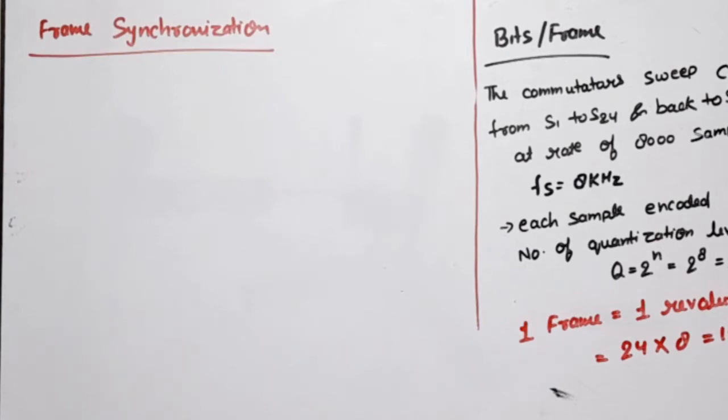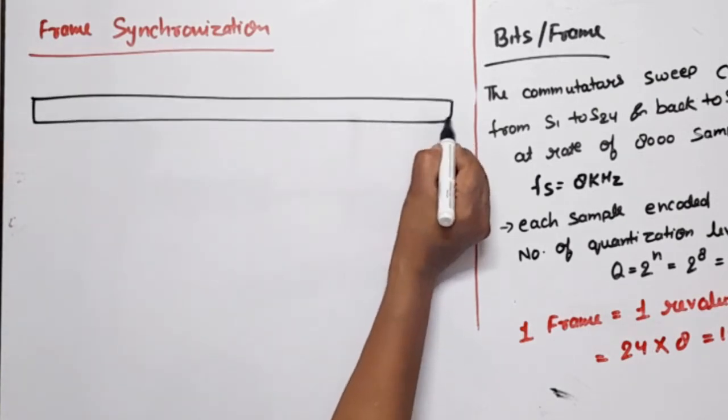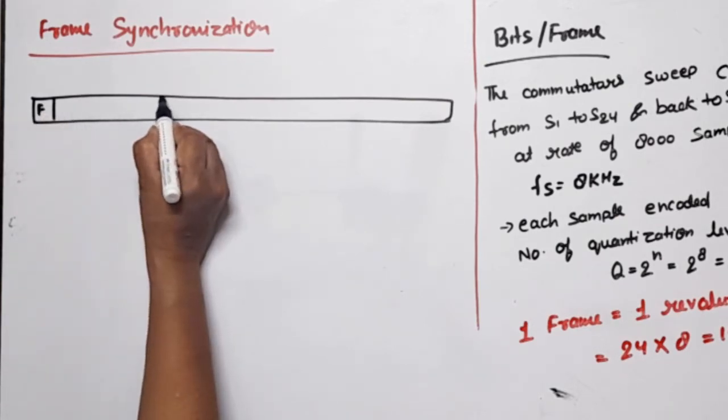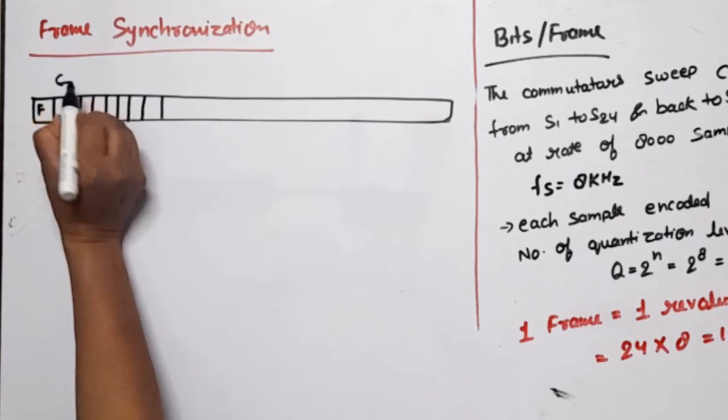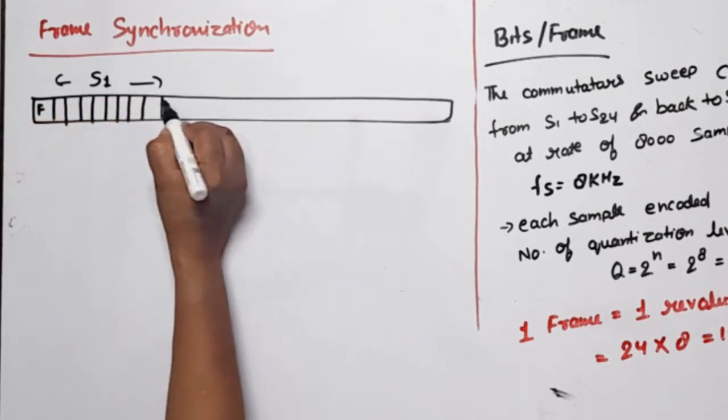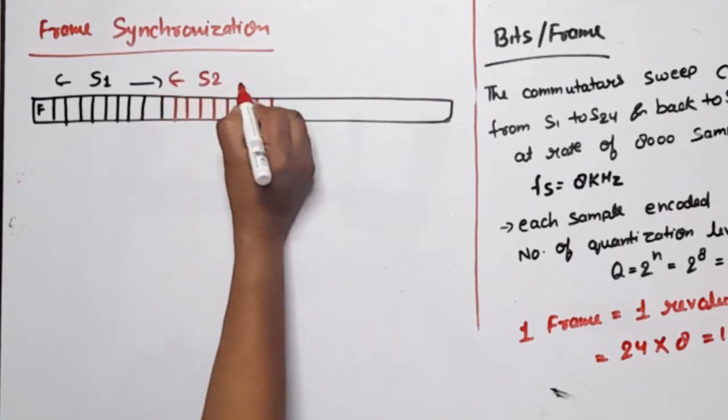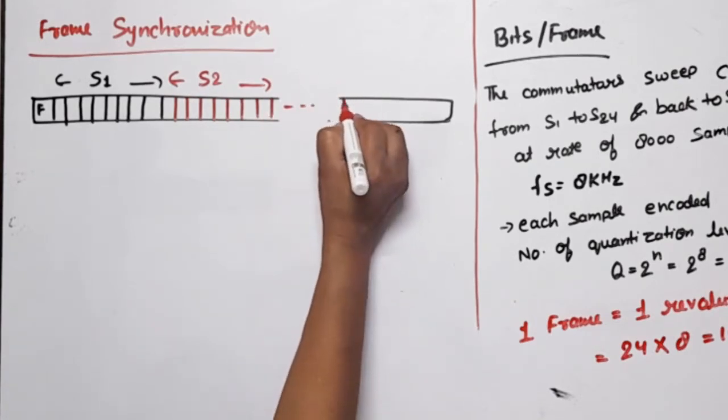The second term is frame synchronization. The commutator at the transmitter end and the receiver end both should be synchronized. We need to know timing information - if they are not synchronized, we will not know which bits correspond to which signals. That's why we use an extra synchronizing bit at the starting. We use one synchronizing bit in every frame. The first bit is the synchronizing bit, suppose F. This is our sample transmitted in 8 bits.